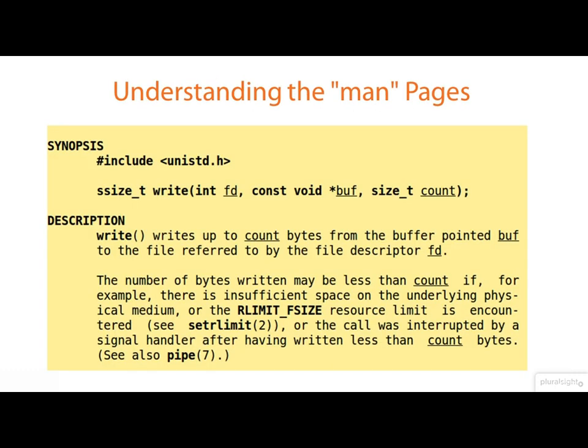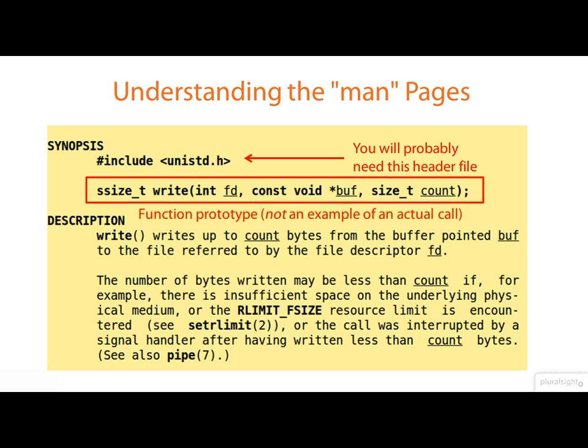The structure of the man pages hasn't changed much in many years. For a system call or library routine, your initial focus will be on the section called 'SYNOPSIS'. Here you'll learn about any header files that need to be included, and you'll see a prototype of the function. It's important to be clear that this is a function prototype — it's not an example of a call to the function.